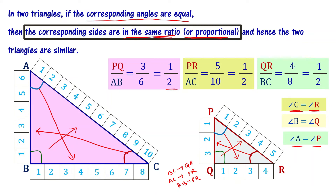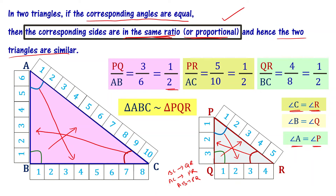Hence the two triangles are similar. Triangle ABC is similar to Triangle PQR by the Triple-A criterion of similarity of triangles. In two triangles, if the corresponding angles are equal, then the corresponding sides are going to be in the same ratio, and hence the two triangles are similar.